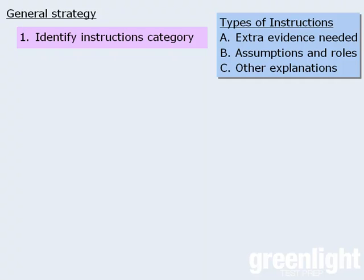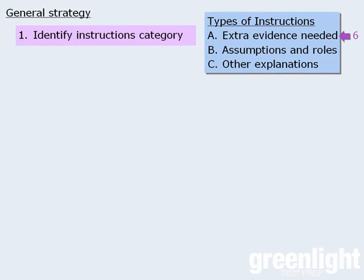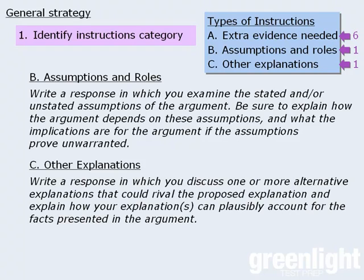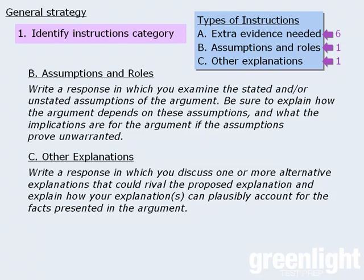To help identify which category of instructions you've received, please recall that six of the eight possible sets of instructions are classified as extra-evidence-needed instructions. The other two categories have only one set of instructions each. These are the instructions for the Assumption and Roles category, and these are the instructions for the Other Explanations category. Any other instructions you see will fall in the Extra-Evidence-needed category.